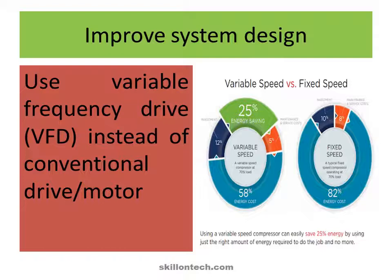Step 4 to make your compressed air system efficient: improve system design. Use a Variable Frequency Drive (VFD) instead of a conventional drive motor. In a graph comparing variable speed versus fixed speed, the energy cost in variable speed is only 58% compared to 82% in fixed speed. So you can save 25% energy when using a variable frequency drive instead of conventional drive motors.